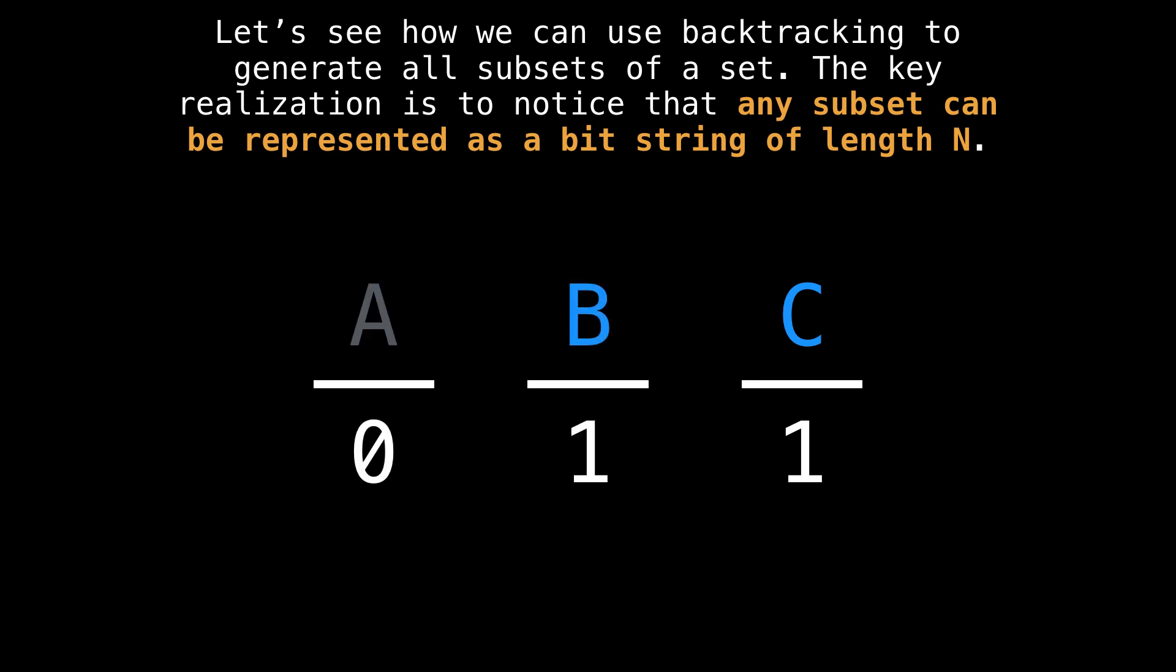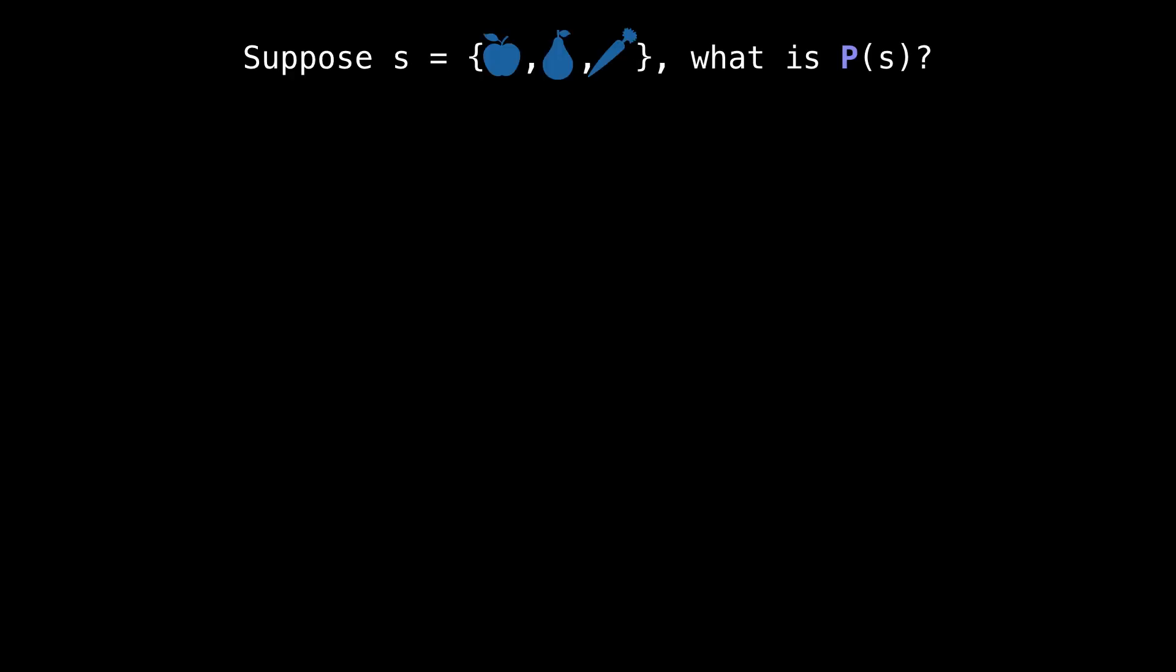Similarly, the bit string 011 would represent the set containing elements b and c, but not a.